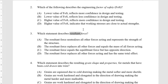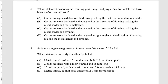Which statement describes the resulting grain shape and properties for metals that have been cold drawn into wire — this is basically asking do you know what work hardening does. I'm okay with this. If you're looking for it in my notes, it's in the annealing page. Work hardening creates elongated grains that are harder and less malleable, harder and stronger — and less ductile.